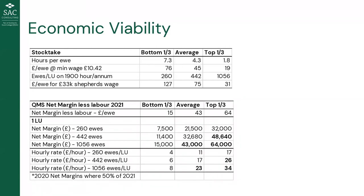Many of us won't pay a shepherd and often won't really value our time, but looking at QMS net margin less labor data from the 2021 lamb crop — if we can run two hours per ewe at 1,000 ewes — we need to be in that top third of profitability, making a net margin of around £64 per ewe that year. But considering that the previous year's net margins were roughly 50% of 2021, we probably need to be in that top third without subsidy payments and around 1,000-plus ewes per labor unit.